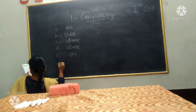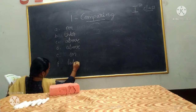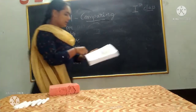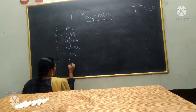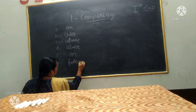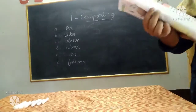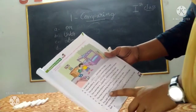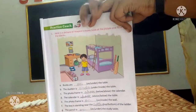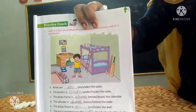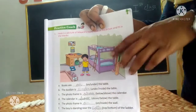Next F: the boy is standing near the — dash — the ladder. He is standing near the bottom of the ladder. Top means above, bottom means below/down. The boy is standing near the bottom of the ladder.